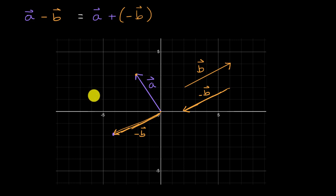And if you did that, it would look like this. This is also the vector negative b.